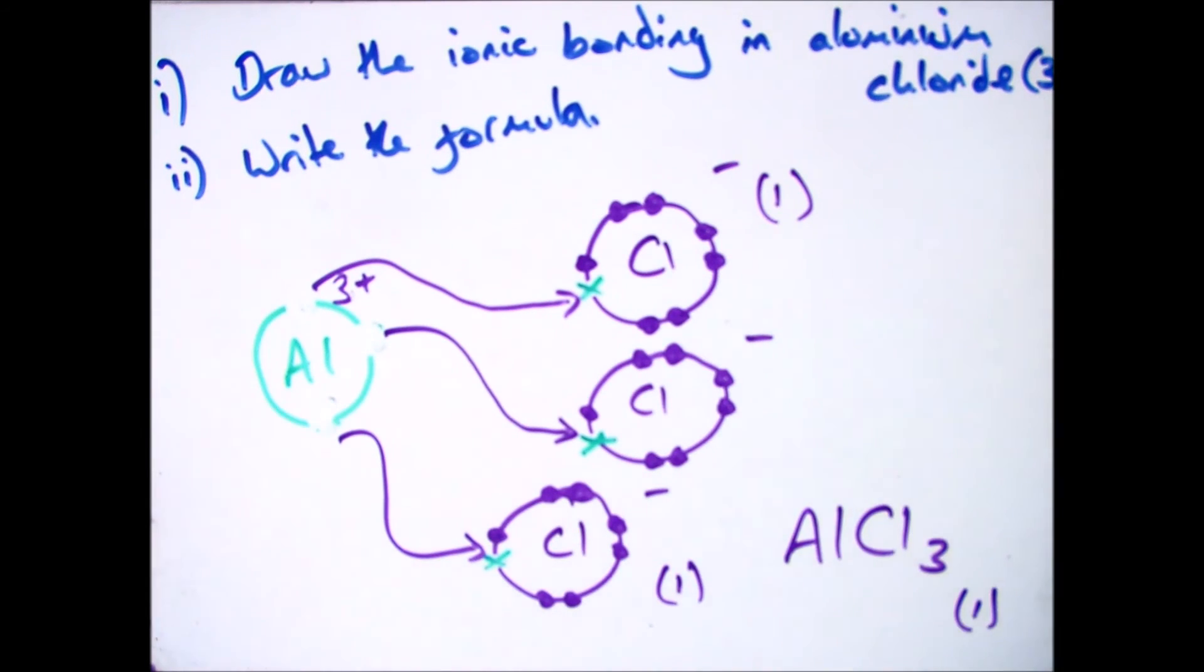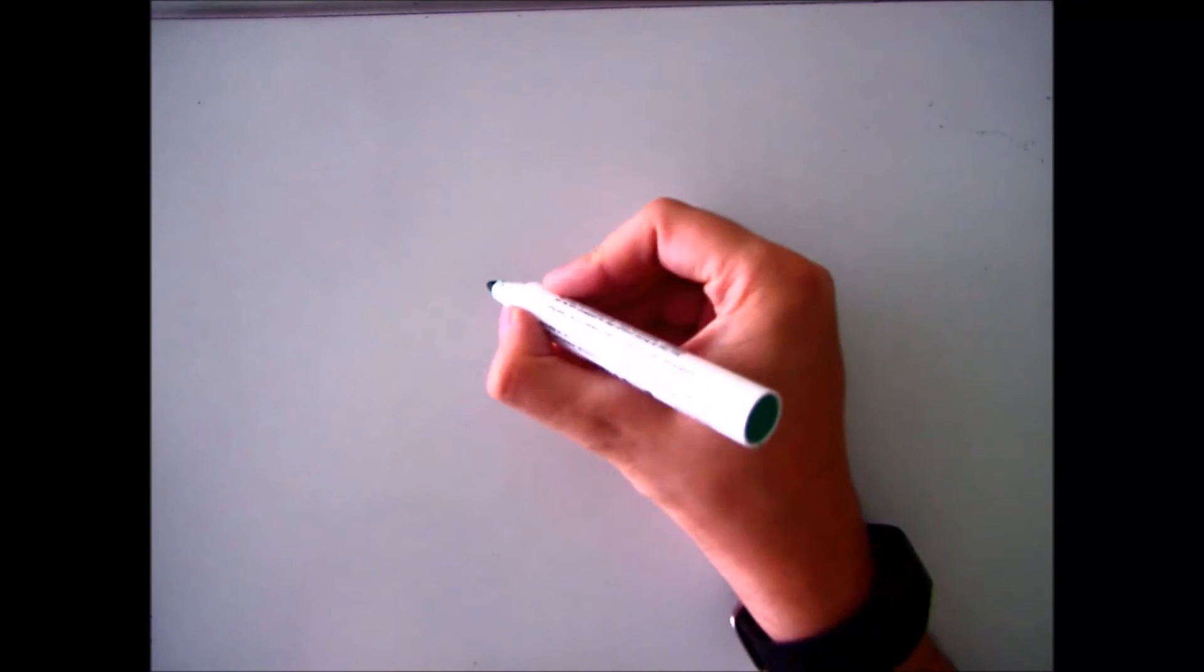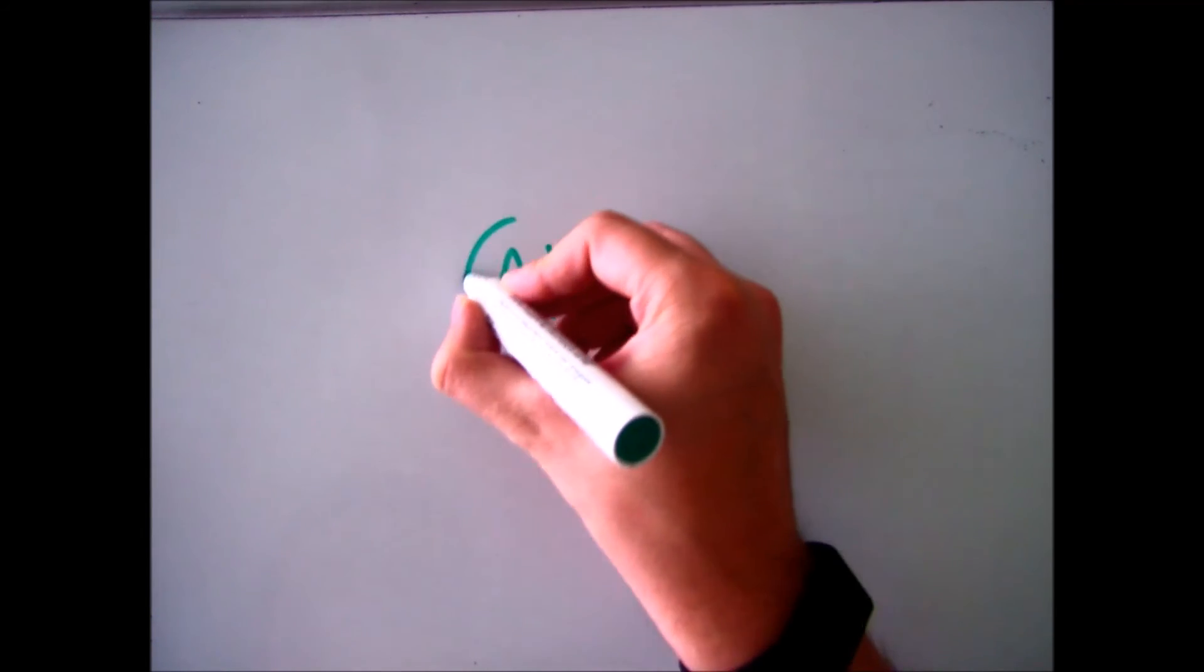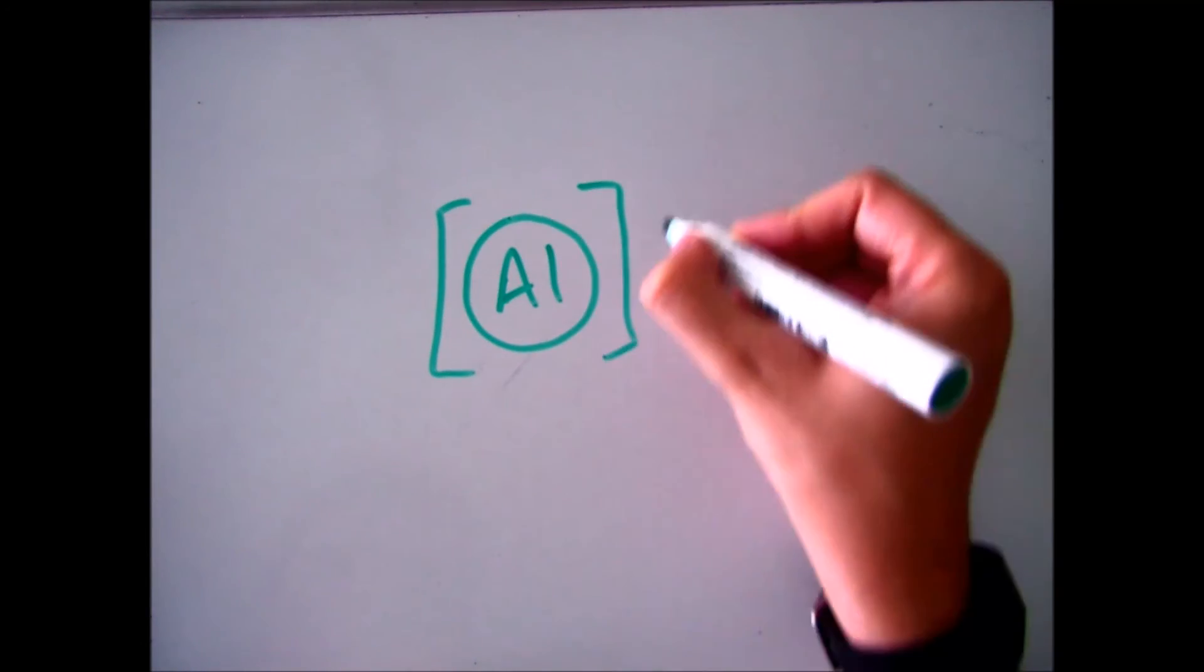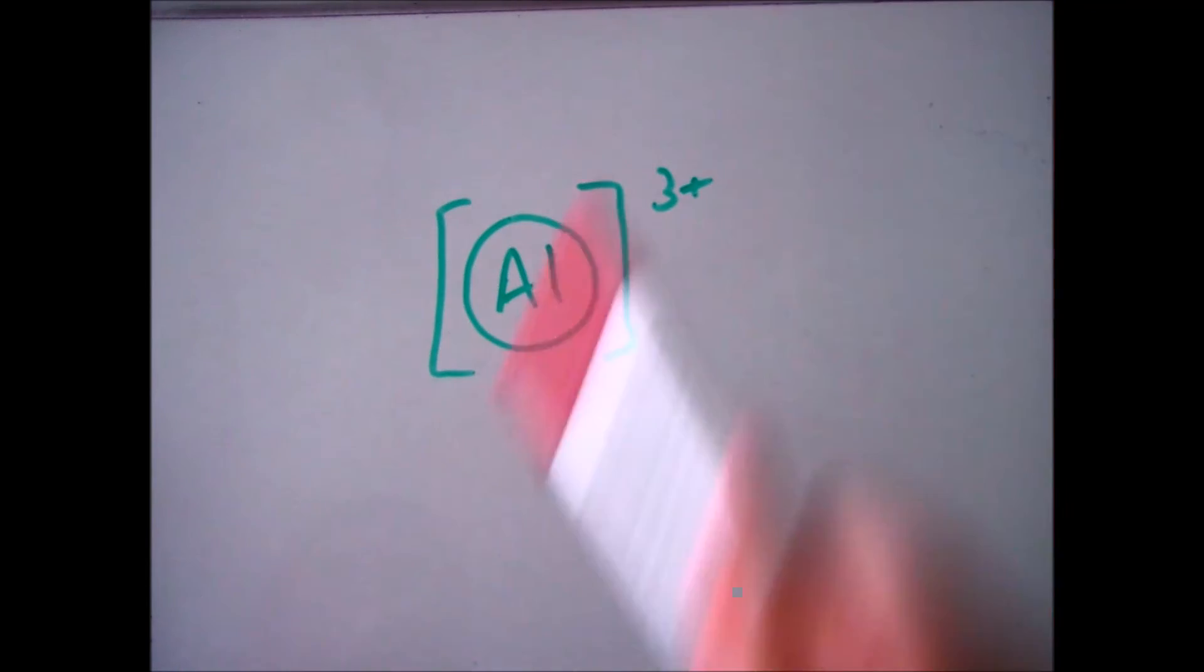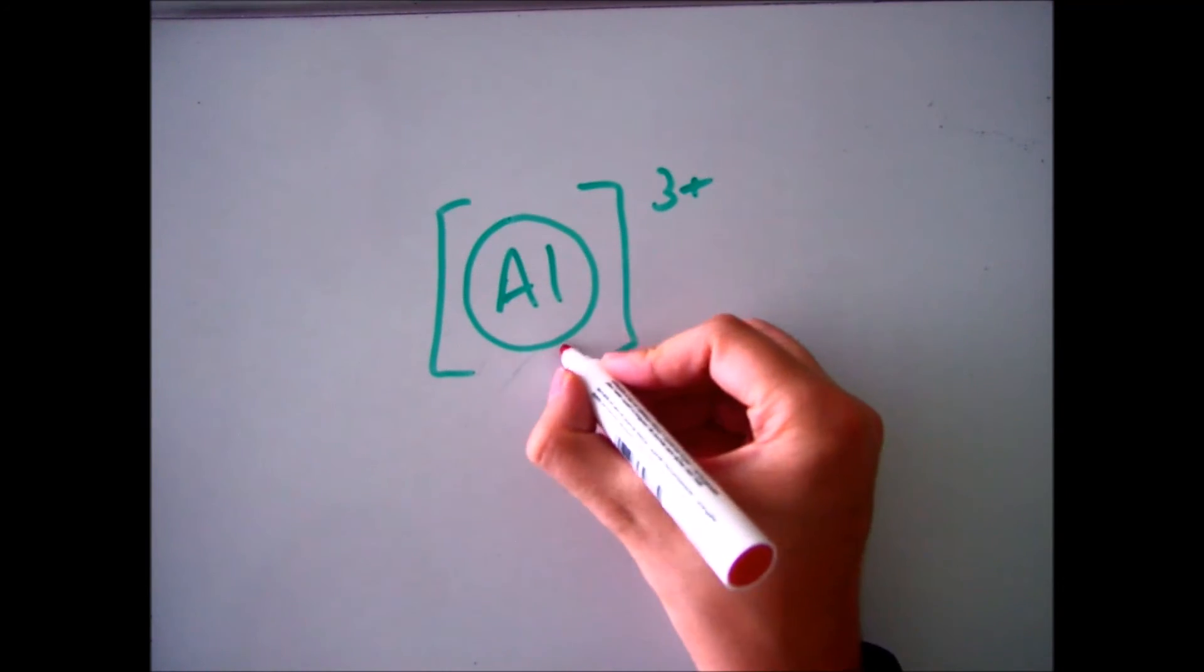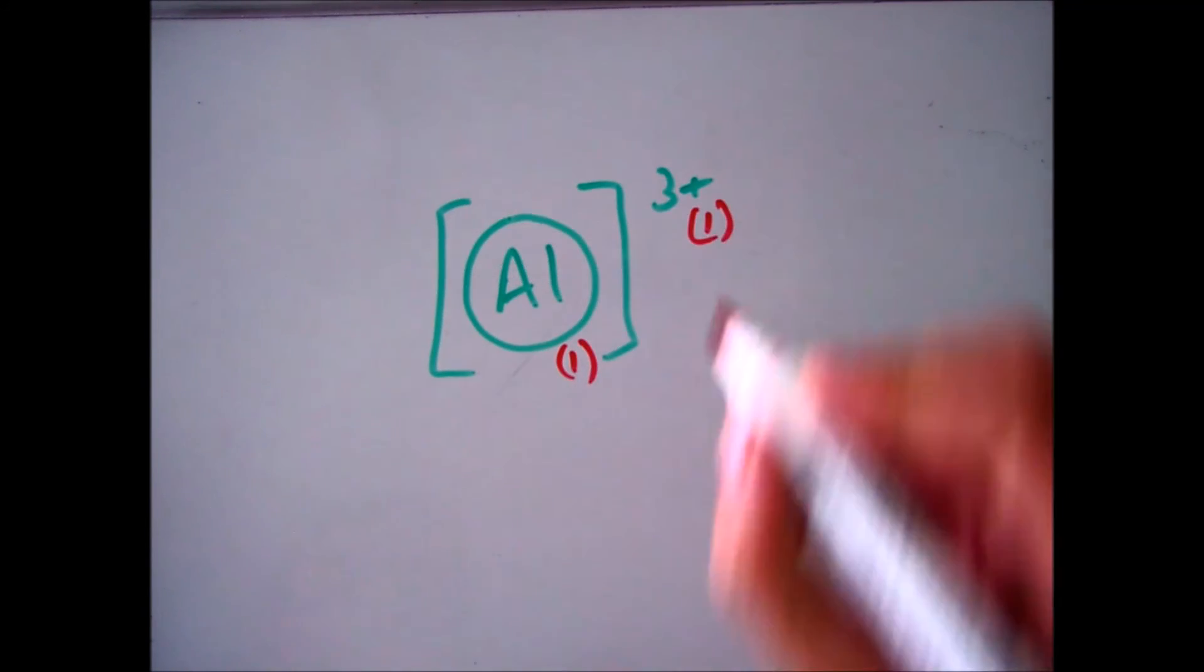So your formula will be AlCl3. So that gets you the one mark for working out the formula. The next step is being able to actually do the actual ionic bonding part. So to do that, you know you have one aluminium. Draw it. You don't need to put any electrons on there, because it now has the full outer shell, and put your 3+ charge on.